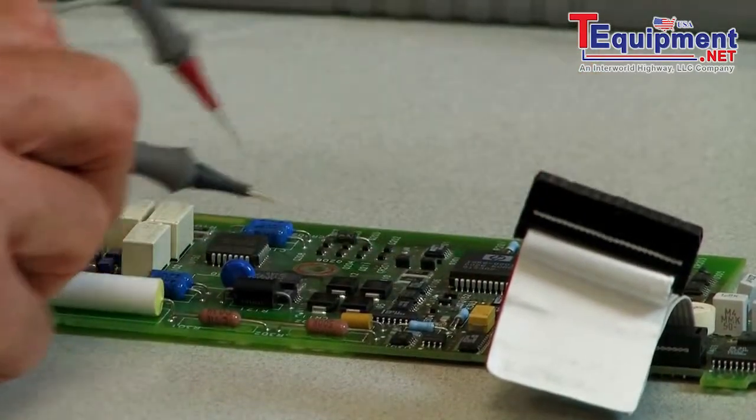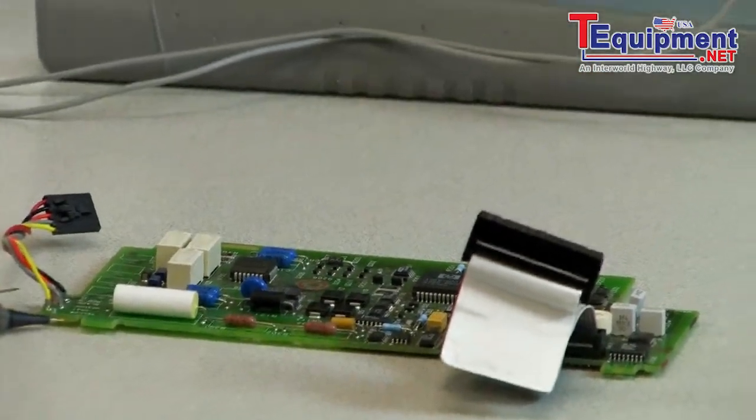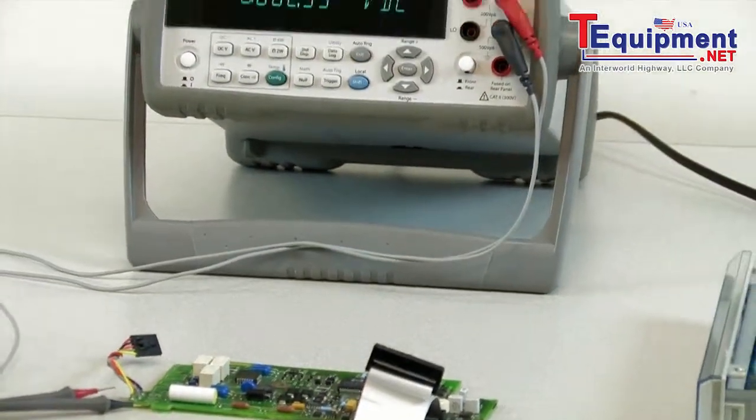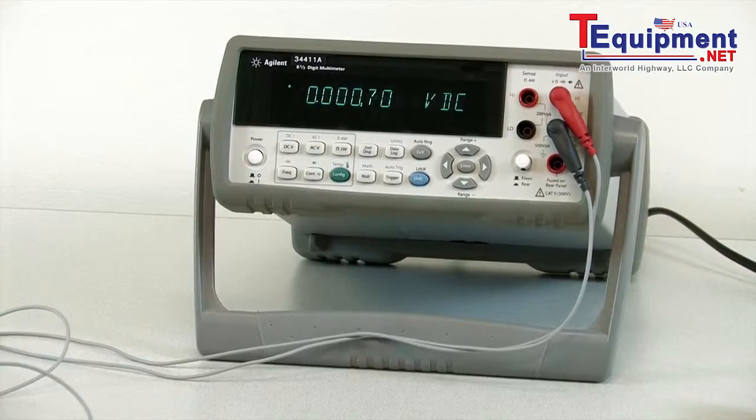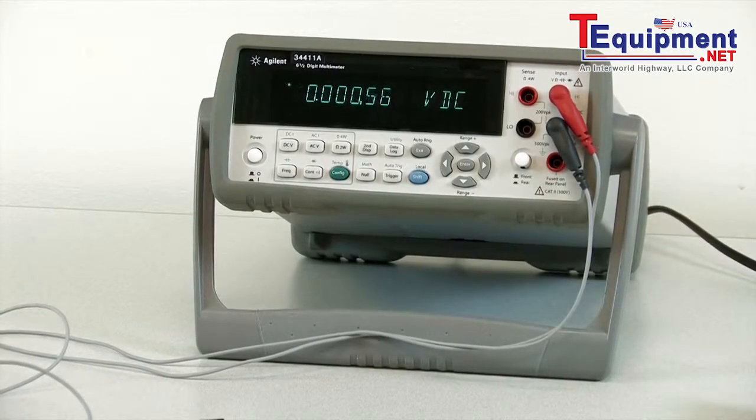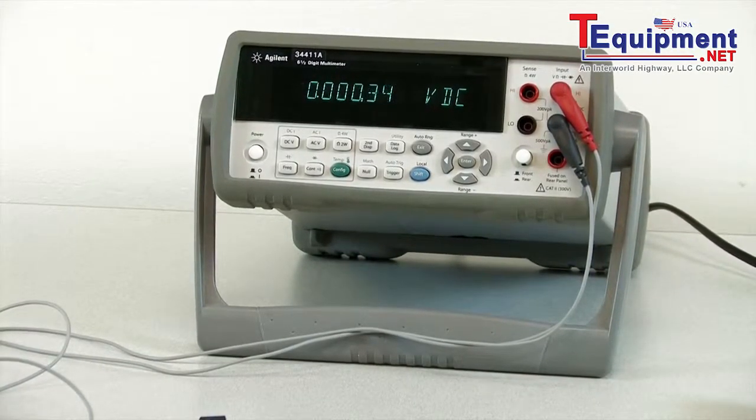Next, you'll want a DMM with a high-quality display. This is the 34411A. It uses a vacuum fluorescent display, so it's easy to read from a variety of angles and under multiple lighting conditions.